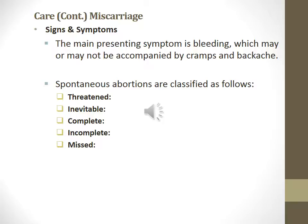Signs and symptoms of abortion: the main presenting symptom is bleeding, which may or may not be accompanied by cramps and backache. Spontaneous abortions are classified as: threatened — unexplained bleeding and cramping, fetus may or may not be alive, membranes are intact, cervix is closed; inevitable — bleeding increases and the cervix begins to dilate, membranes may rupture; complete — all products of conception are expelled; incomplete — some but not all products of conception are expelled; and missed — the fetus dies but remains in the uterus and may become septic.